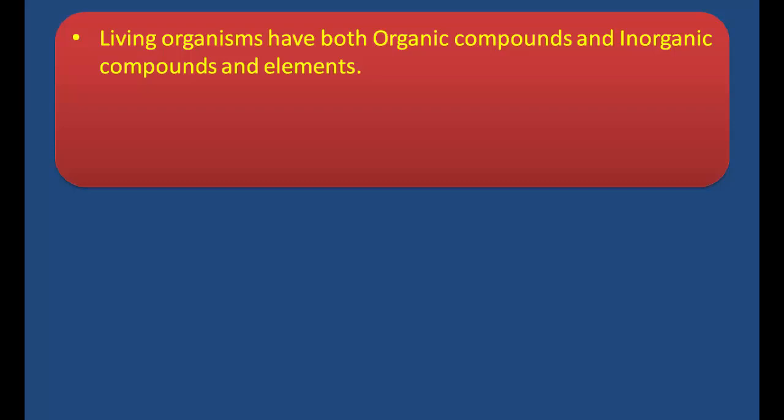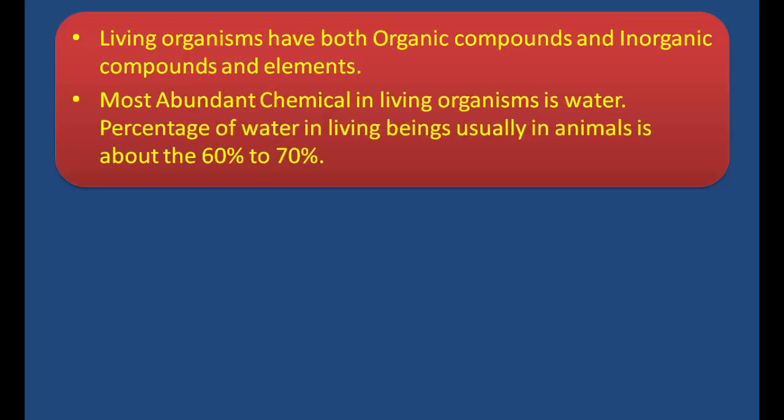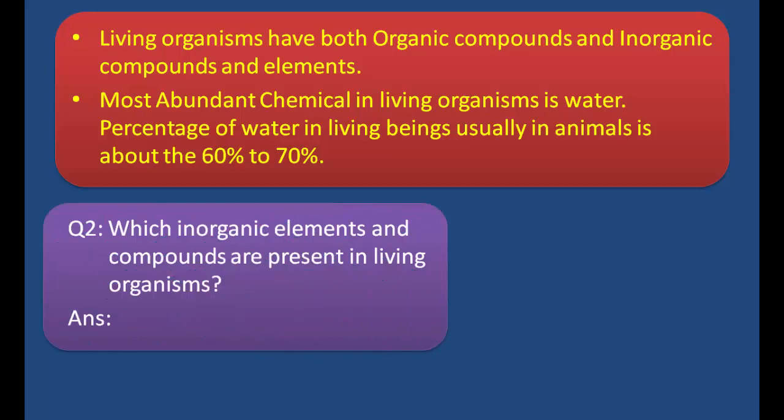Next important point: living organisms have both organic compounds and inorganic compounds and elements. The most abundant chemical in living organisms is water. The percentage of water in living beings, usually in animals, is above 60-70%. All organisms contain organic compounds and inorganic compounds and elements. The most abundant chemical found in organisms is water, and animals contain 60% to 70% water.